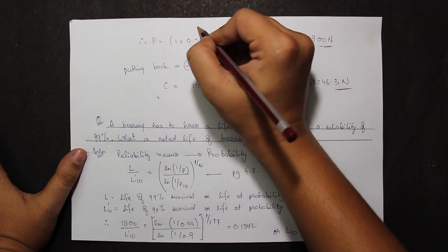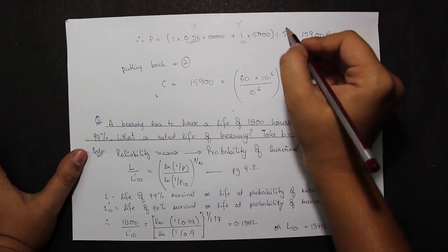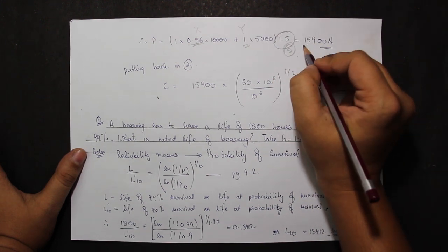Substituting all these values back in the equation for P and taking S as the service factor as 1.5, I get the value 15900 N.